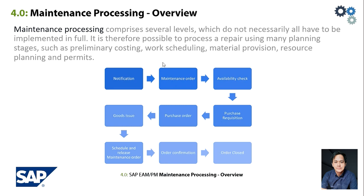Here is the maintenance processing overview of Enterprise Asset Management: from notification, order, availability check, purchase requisition, purchase order, goods issuance, schedule and release of maintenance order, order confirmation, and the last is order closing.